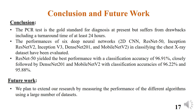To sum things up, PCR testing is considered the gold standard for detecting COVID-19, but its major drawback is a turnaround time of around 24 hours. Instead of PCR, we used deep neural networks to detect COVID-19 from chest x-ray images. ResNet-50 demonstrated the best performance with a classification accuracy of 96.91 percent, and its closest competitors are DenseNet-201 and MobileNet-V2 with classification accuracies of 96.22 and 95.88 percent respectively.